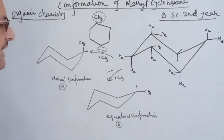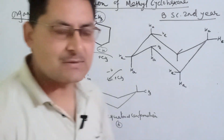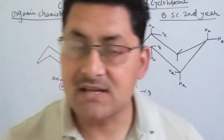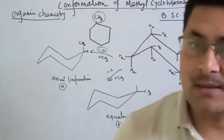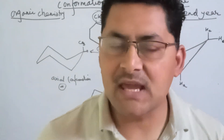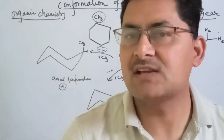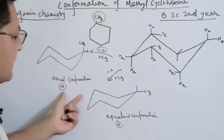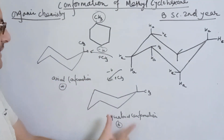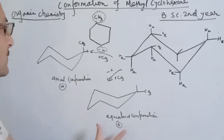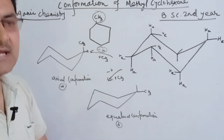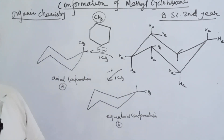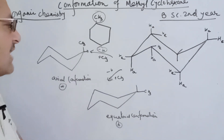I am going to have two types of methylcyclohexane. If you look at the same type of methylcyclohexane, then you are going to have a methyl group in the axial and equatorial position. It will be an equatorial conformation of cyclohexane. You can see the methyl group in the equatorial position.